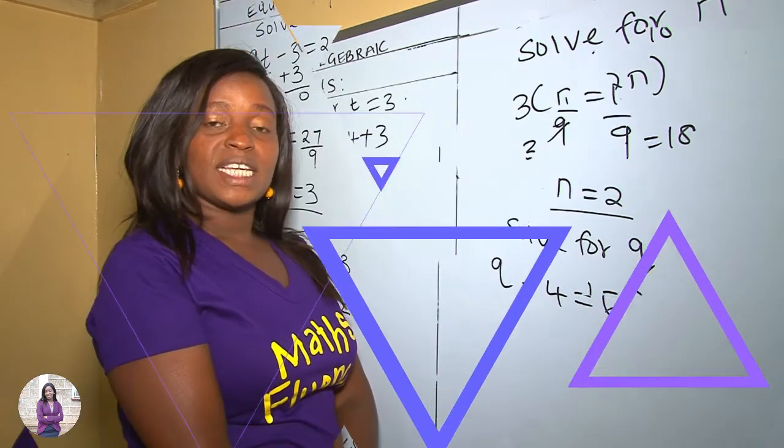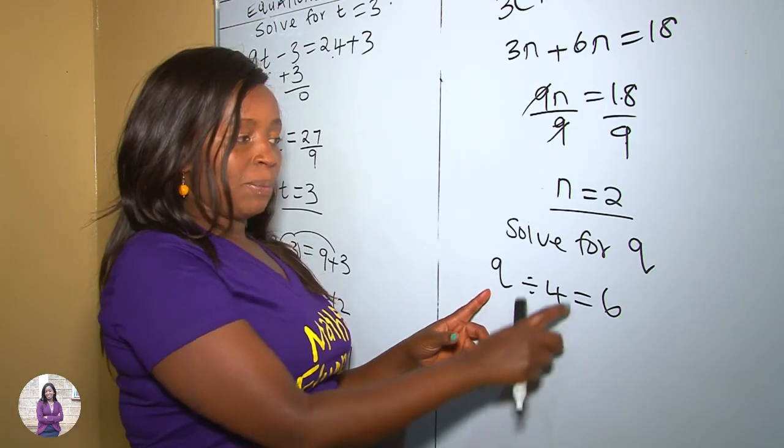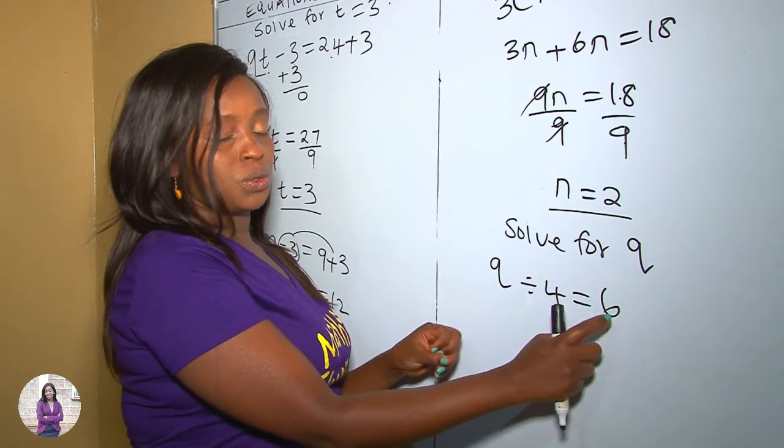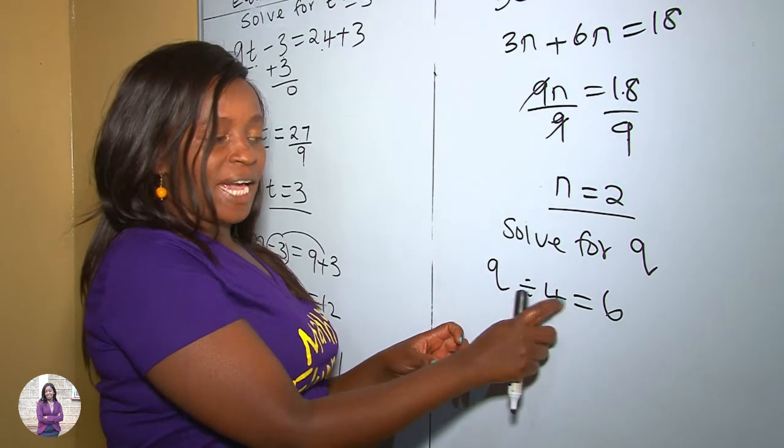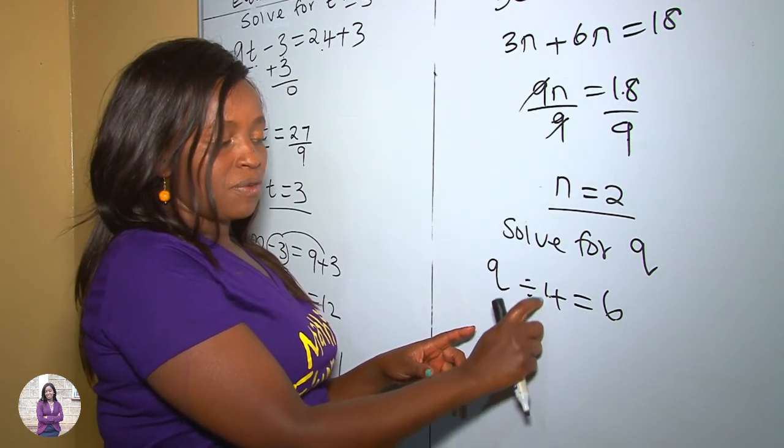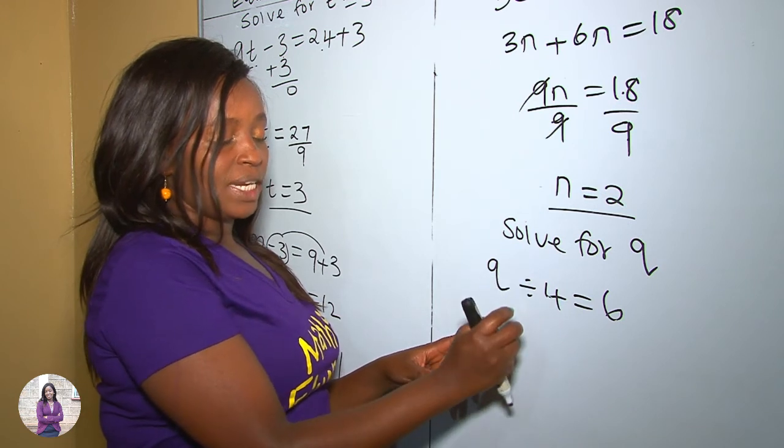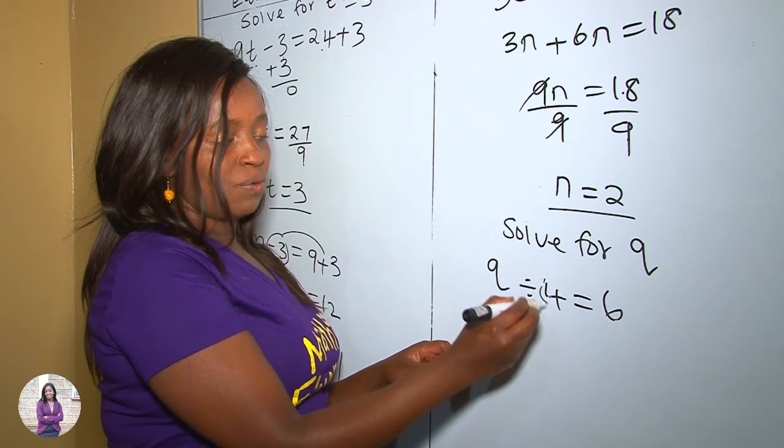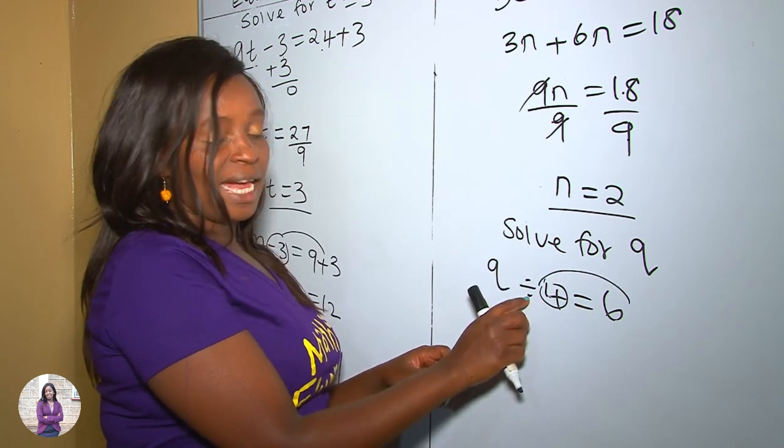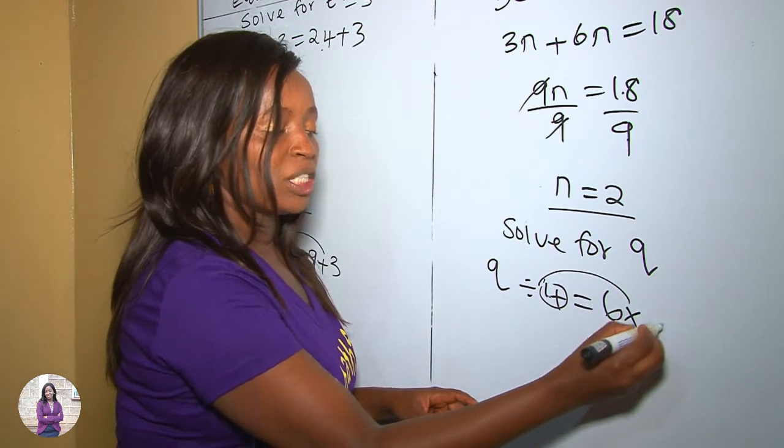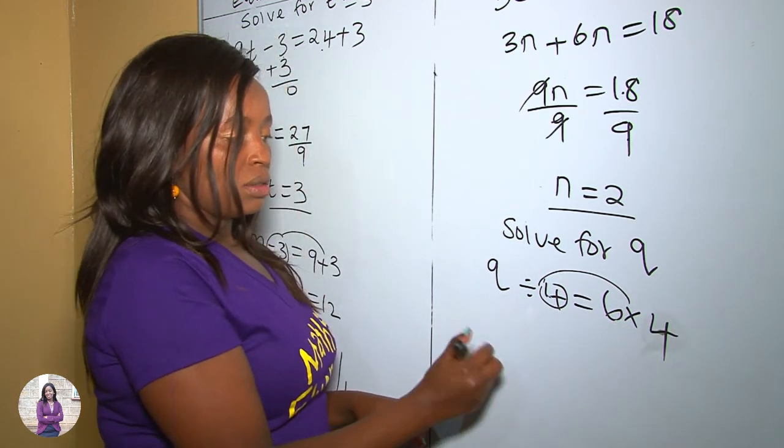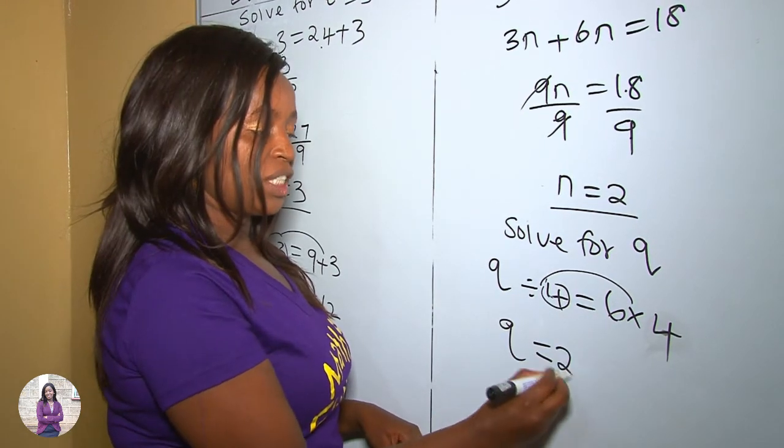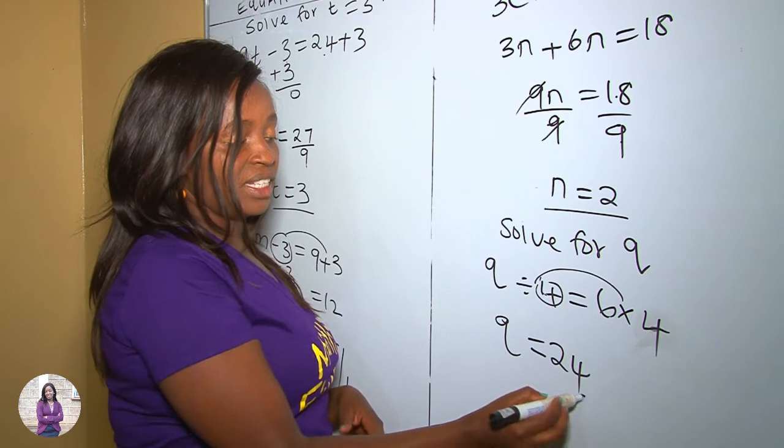Let's get our last example. In this question we are supposed to solve for the value of q. q divided by 4 is equals to 6. 4 and 6 are like terms. The opposite of division is multiplication, so here we take this 4 to the other side and the sign changes from division to multiplication. So q is equals to 6 times 4, which is 24, and the answer is 24.